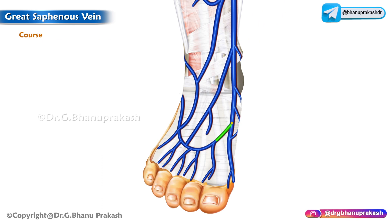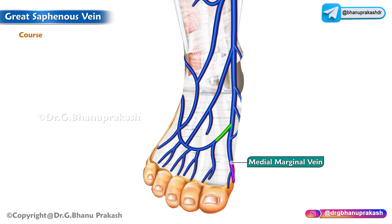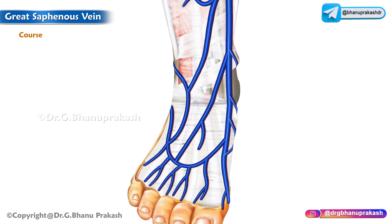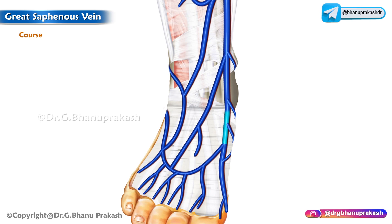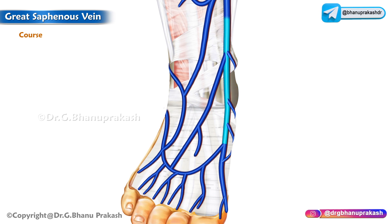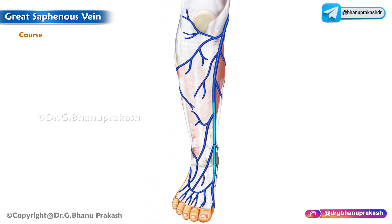Let us talk about the course of the vein. The great saphenous vein is formed on the dorsum of the foot by the union of the dorsal venous arch of the foot as well as the medial marginal vein of the foot. The vein runs upwards approximately 2.5 centimeters in front of the medial malleolus.